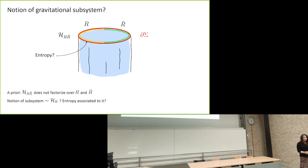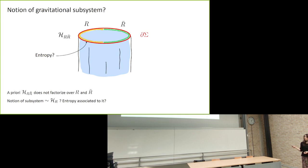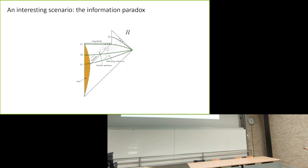We can consider a partition of the boundary into two regions R and R-bar, and ask whether there is a notion of subsystem associated to each region and whether we can compute an entropy for it. This is non-trivial because the Hilbert space a priori does not factorize over components associated to R and R-bar.